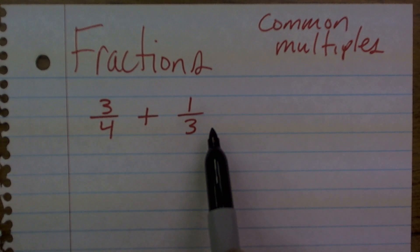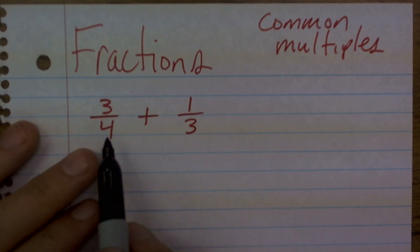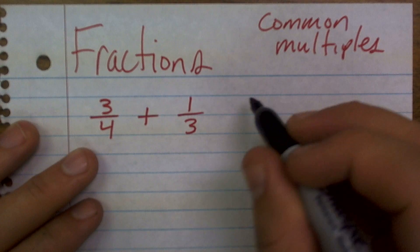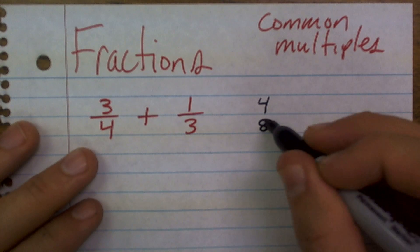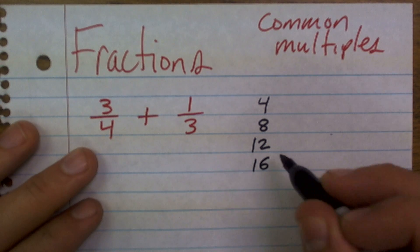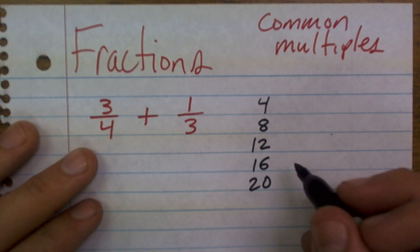So one of the easier tricks to kind of look at is just to write out the multiples of each of your denominators. So if I was going to start with 4, well, 4 times 1 is 4, 4 times 2 is 8, 4 times 3 is 12, 4 times 4 is 16, and 4 times 5 is 20.